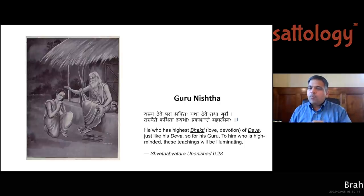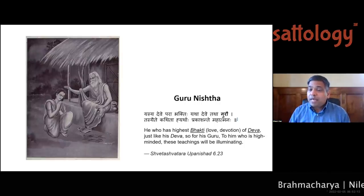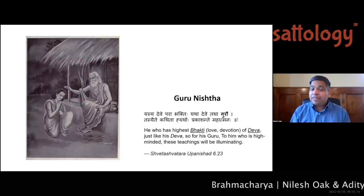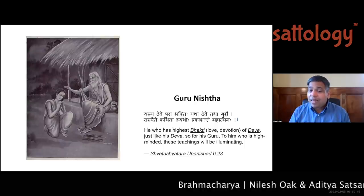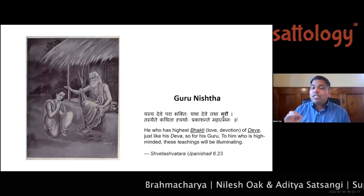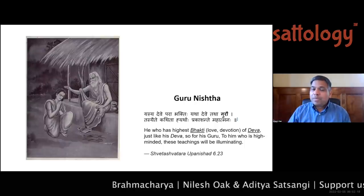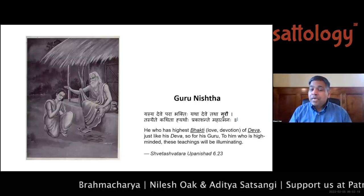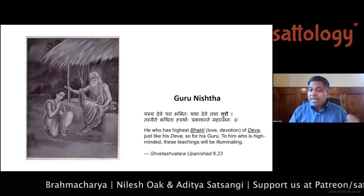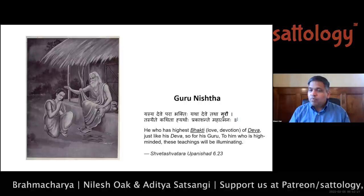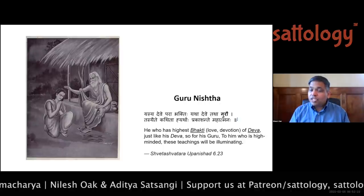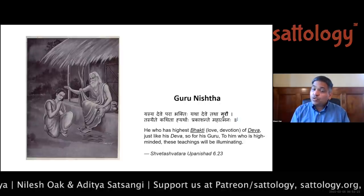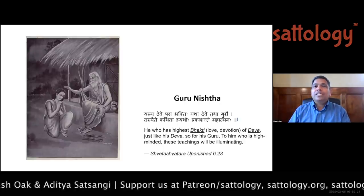In grihastha, brahmacharya is in the background but it is a mutual pati-patni nishtha — mutually agreed upon and sticking to that. In Marathi sangeet nataka, there is a tradition called nandi — the opening prayer. One nandi song says: 'vivaha karuni madana zarila' — through vivaha, the internal madan (desire) was killed. It was managed, controlled, eliminated through marriage. How beautiful.